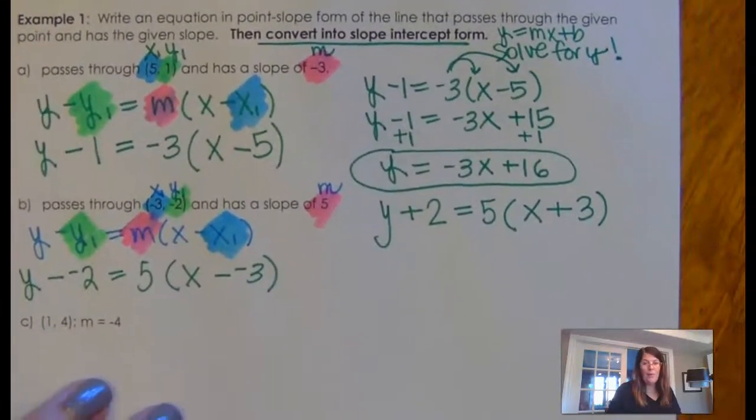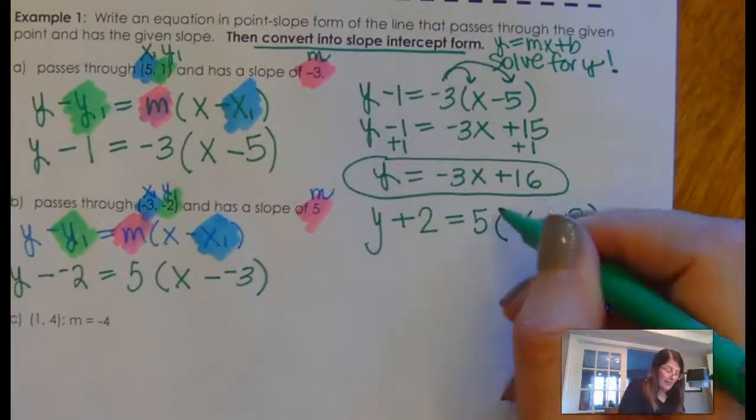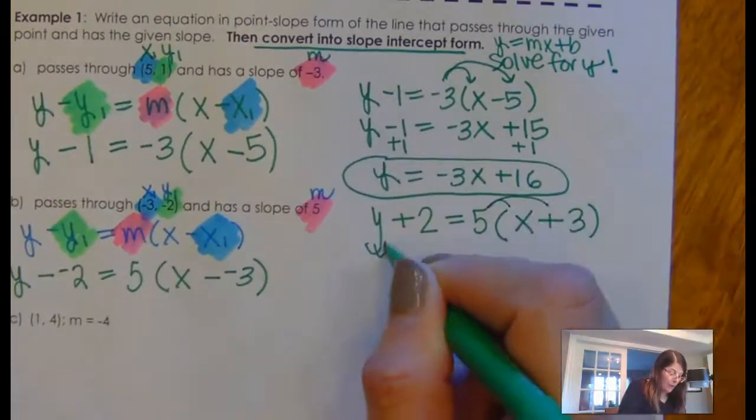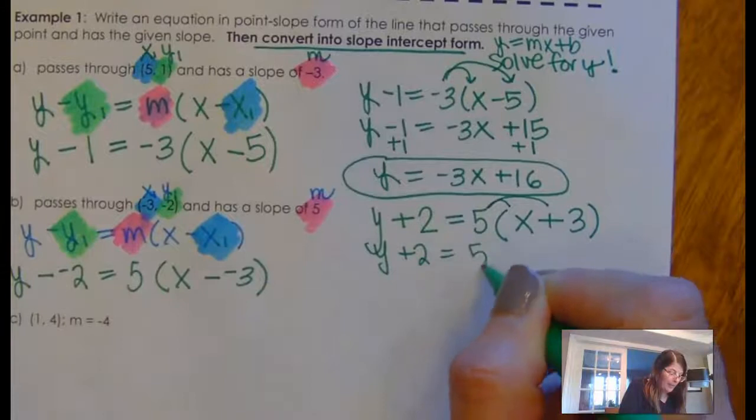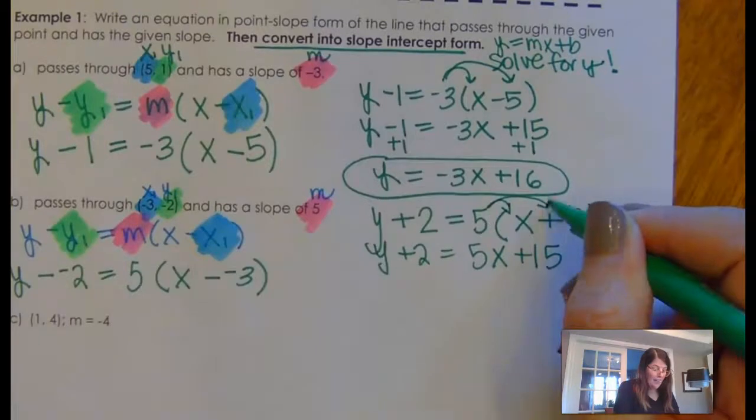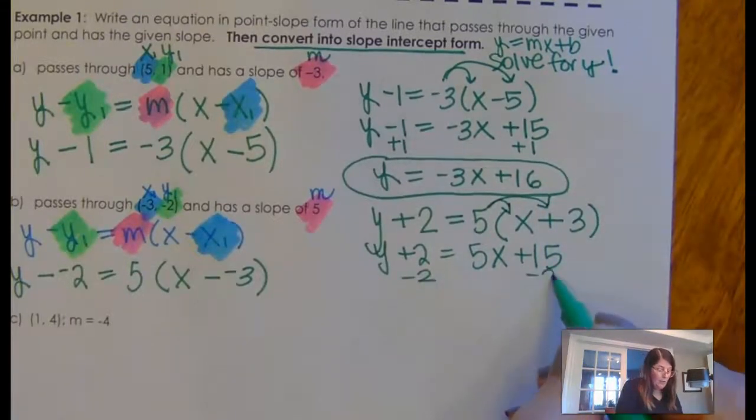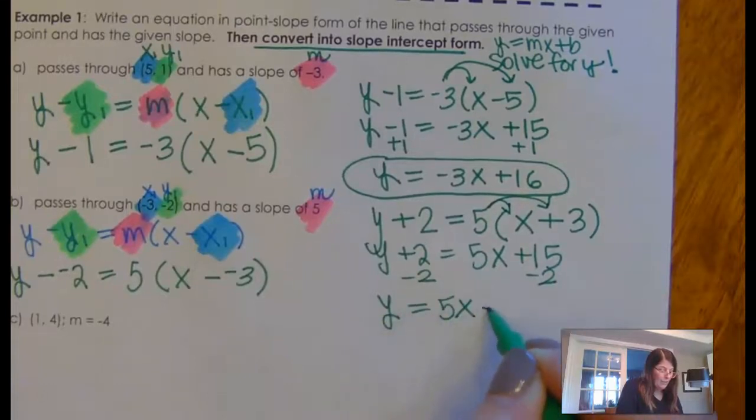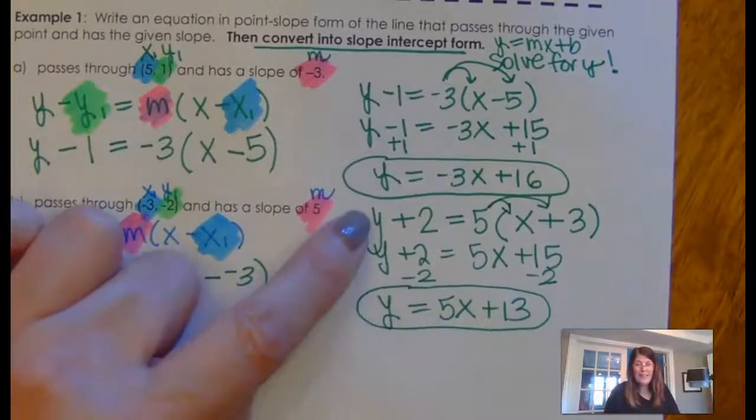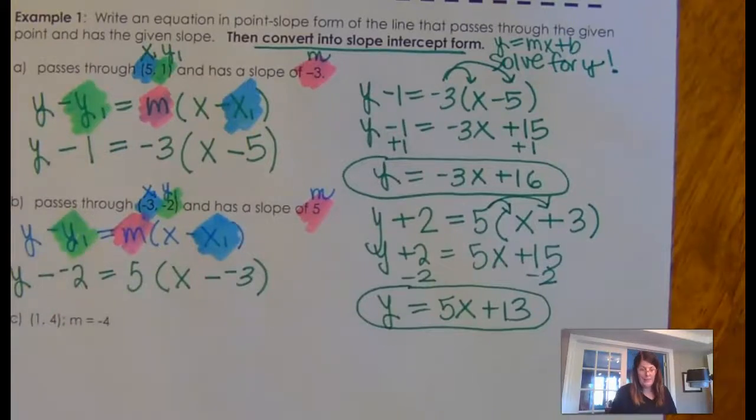So now, I can just celebrate for a minute. We have written the equation in point slope form. Now, I have to solve it for Y. So, Y plus 2 is 5X plus 15. I distributed that 5 to everything on the inside of the parentheses. And now, I'm just moving this 2 over and I have Y equals 5X plus 13. So, this is the equation in point slope form. This is the equation in slope intercept form.